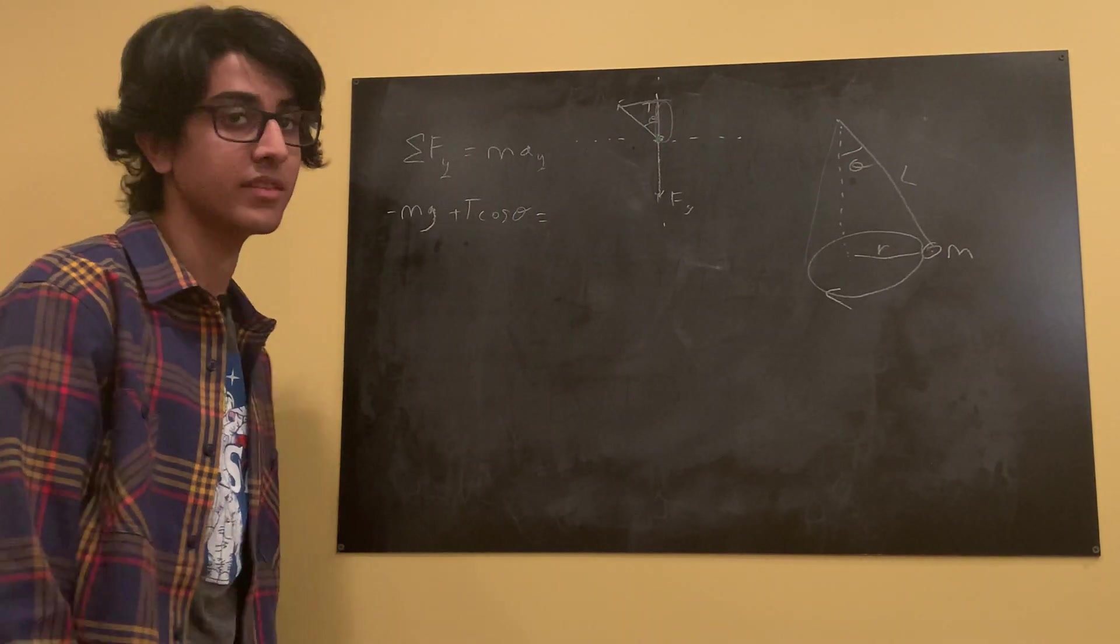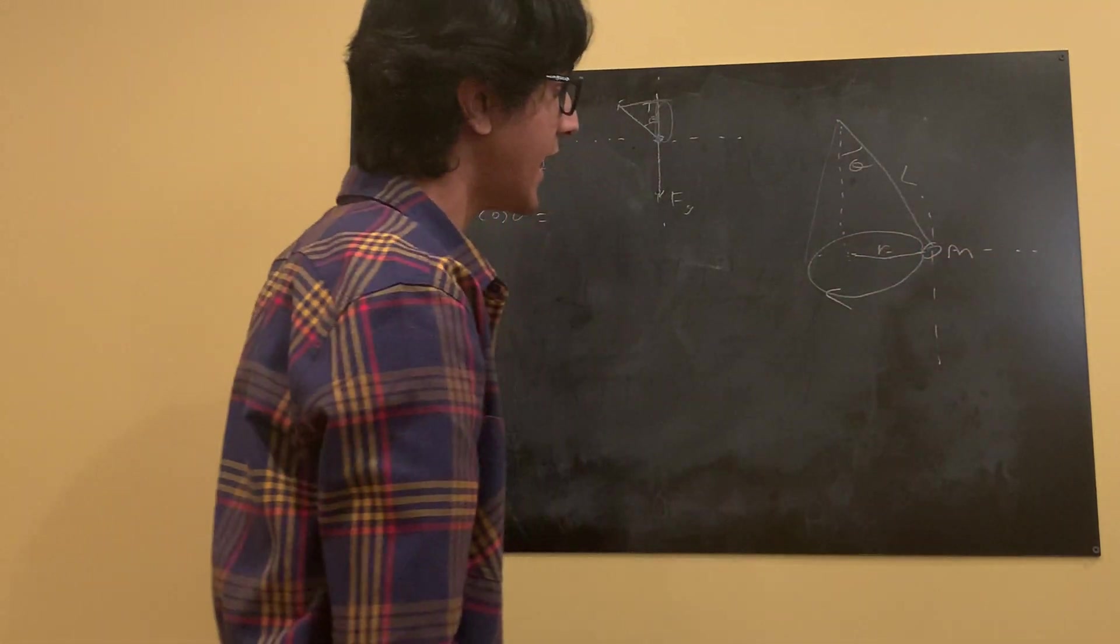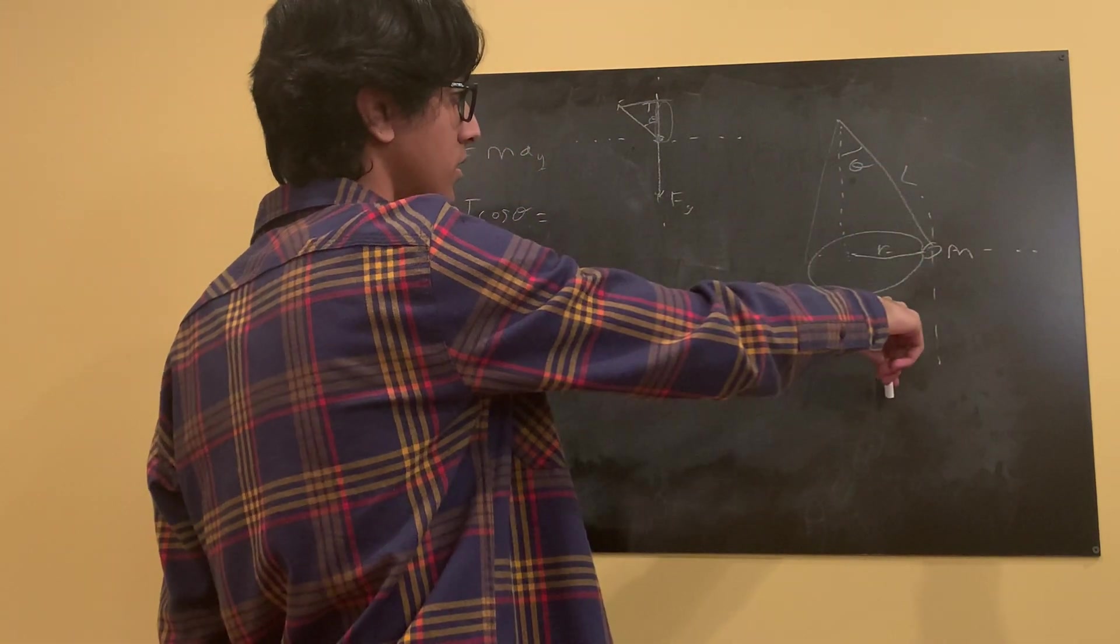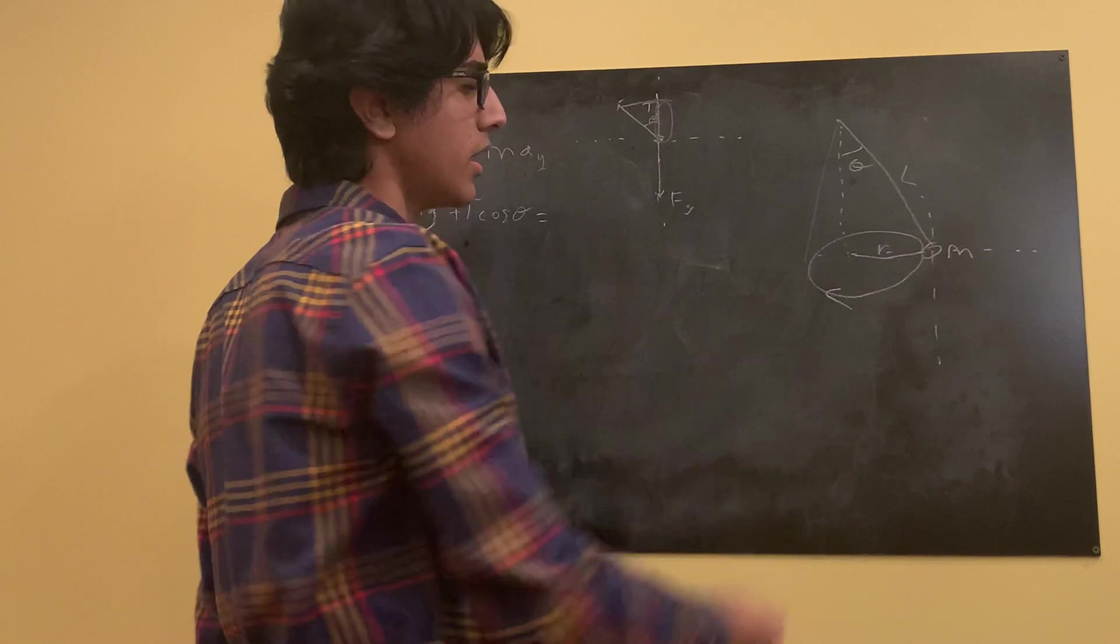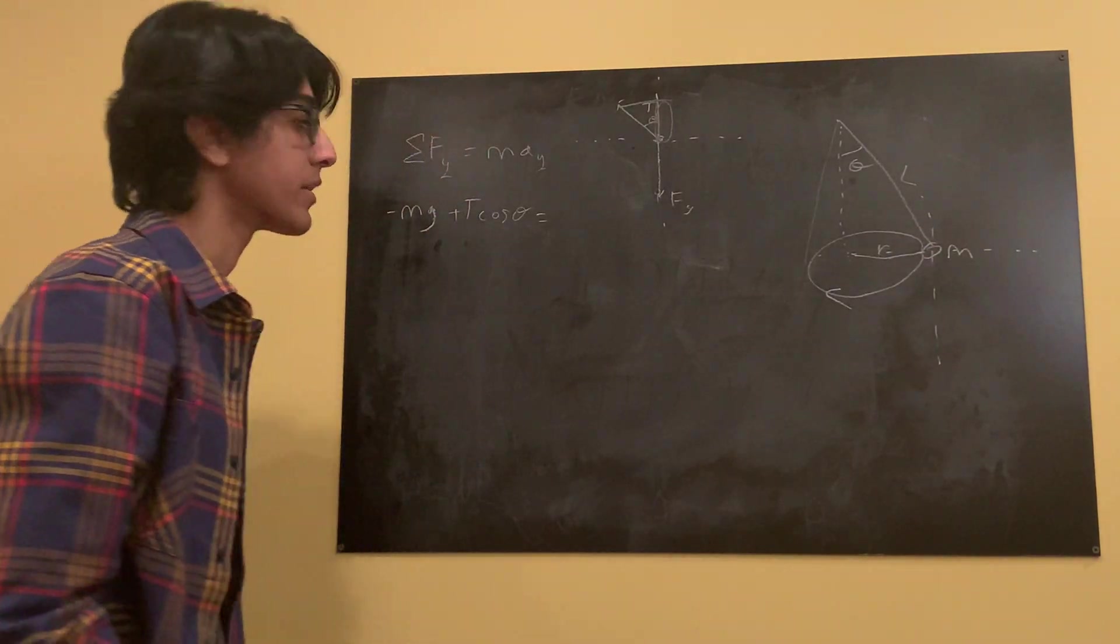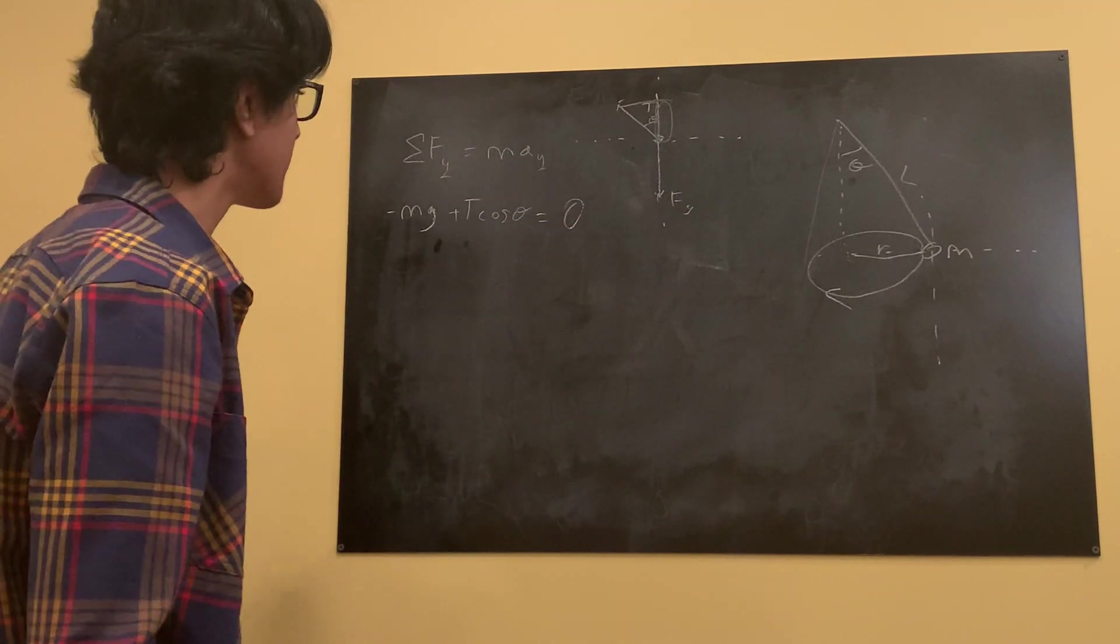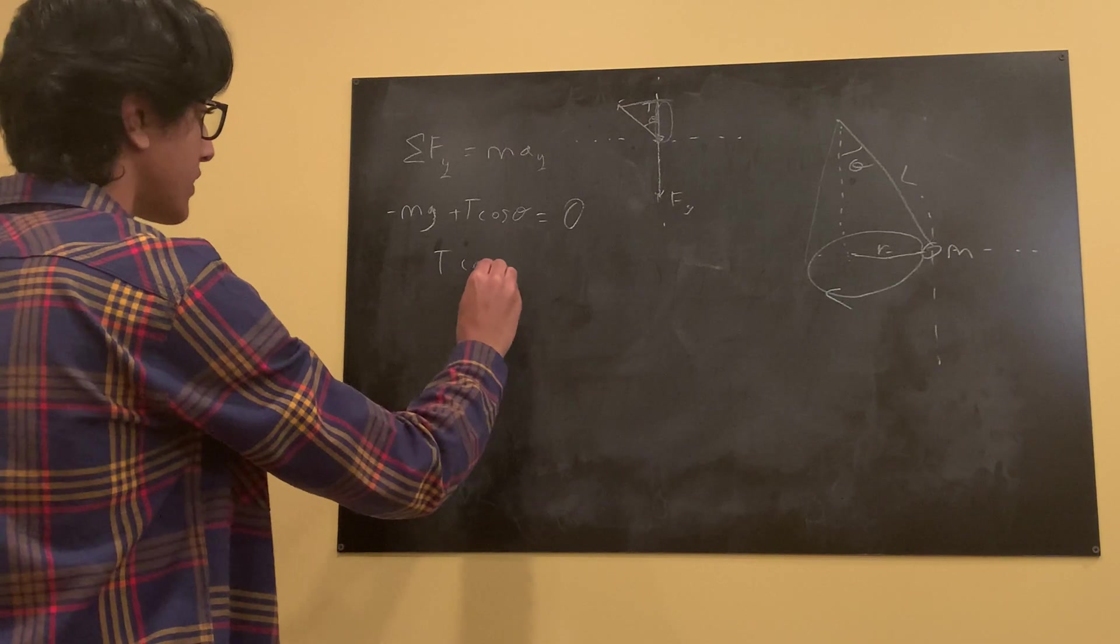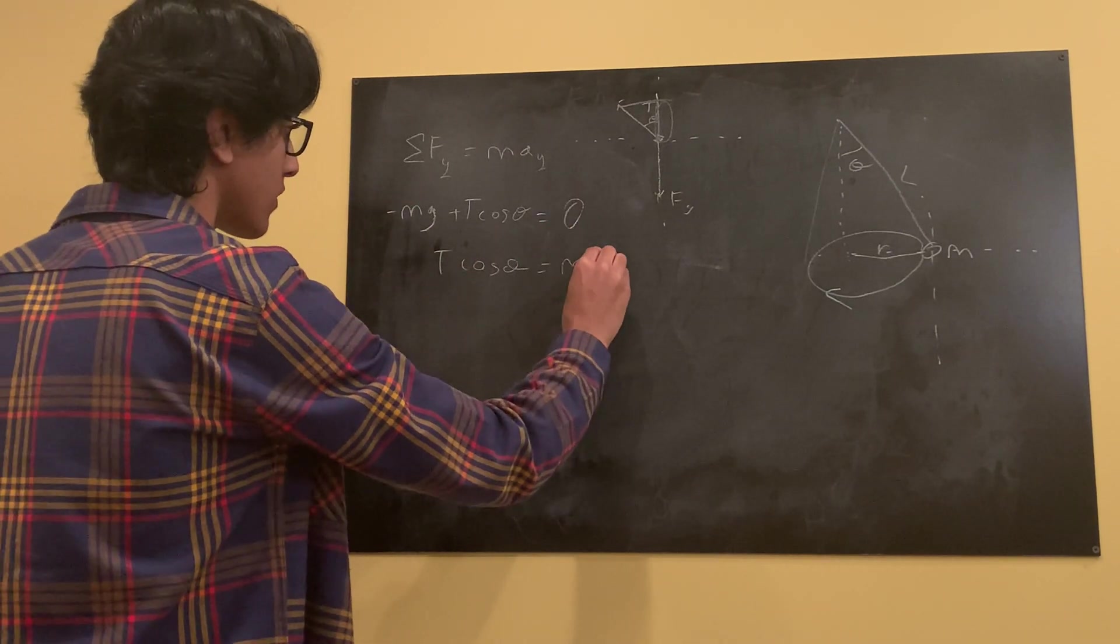We see that it's not moving in the y direction, right? And it's only moving in this horizontal direction. So if it's not moving in the y direction, it can't be accelerating in the y direction. So this is a big fat zero. We can put a zero right there. And then we can just make this look a little better. T cosine theta is equal to, add mg to both sides. It's equal to mg.